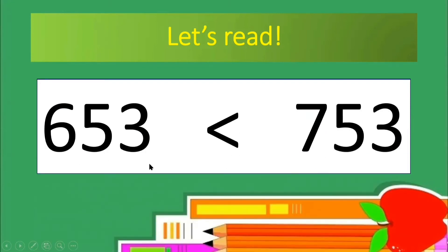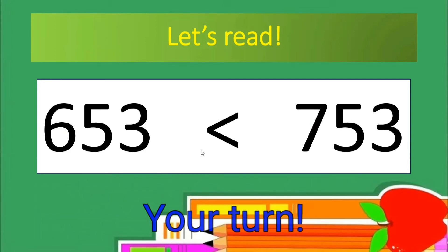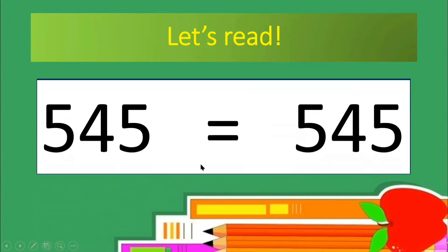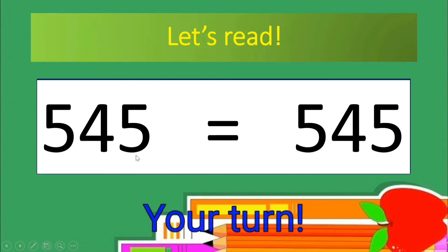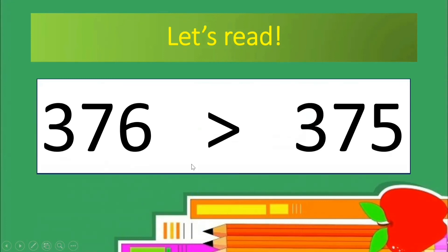653 is smaller than 753 — your turn. Good reading! 545 is equal to 545 — your turn. 376 is greater than 375 — your turn.